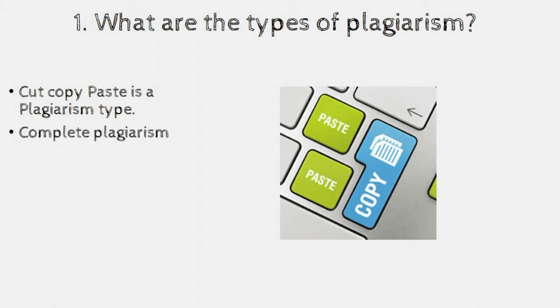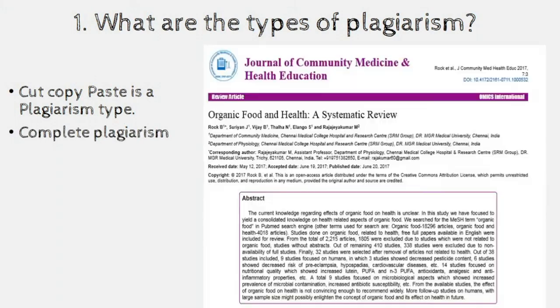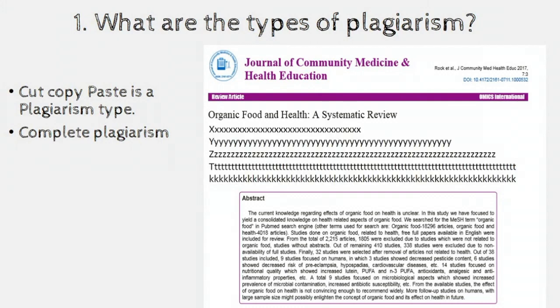The most common type is complete plagiarism. This is how it works: you take somebody's article and replace their name with your name, your institution, and your details, then submit it to another journal. This is called complete plagiarism. Verbatim plagiarism is when you take a segment from an article and mix it in. There are various types, but the basis is the same — you take somebody's content and don't cite it. That comes under plagiarism.